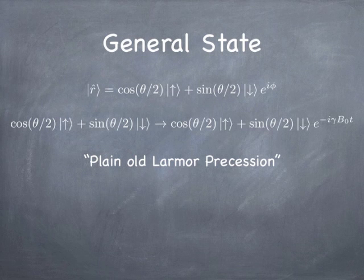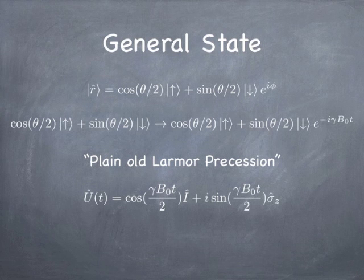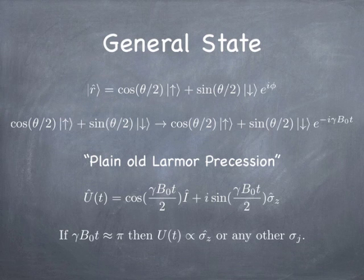I just wanted to point out: you're familiar with this in one context, but if you happen to apply the magnetic field for a period of time such that gamma B_0 t equals pi, notice that the cosine term goes away completely and the sine becomes one, so the time evolution operator for that short period of time becomes simply proportional to the sigma operator. So you can physically realize the situation in which the quantum state simply gets multiplied by a sigma operator by pointing a magnetic field in a particular direction and waiting for the appropriate amount of time. We're going to need this in just a little bit when we finish the teleportation process.